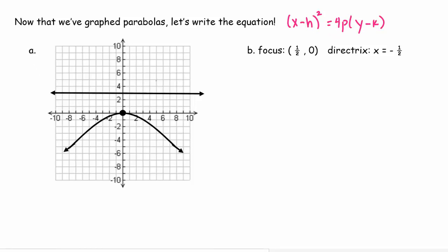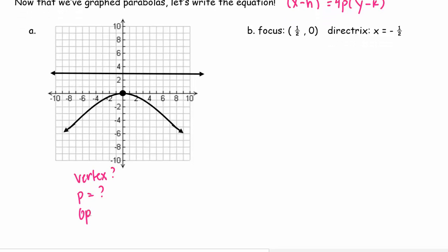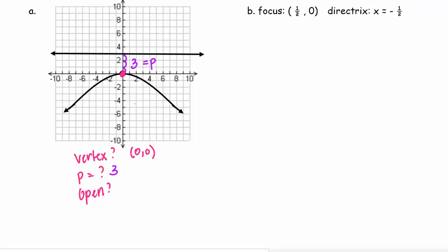So we're going to use the graph. So for part a, we need my vertex. We need p, and is it opening up or down? So there are three questions that you need. So when you have your parabola, I have my vertex here at (0,0). Now remember, p is the distance from the vertex to the directrix. So that's 1, 2, 3. So p is 3, and this is opening down.